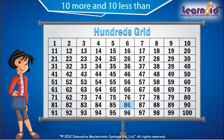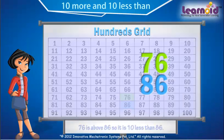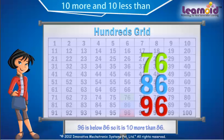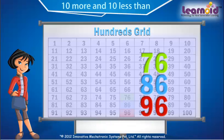Find 10 more and 10 less than 86. 76 is above 86, so it is 10 less than 86. 96 is below 86, so it is 10 more than 86.